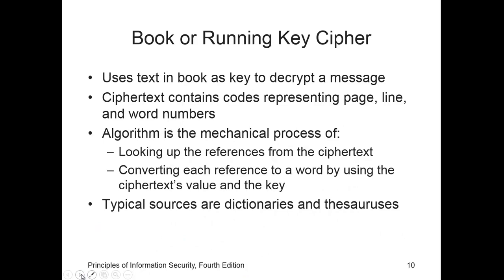The running key cipher is a type of poly-alphabetic substitution cipher that uses text from a book as a key to decrypt the message. The ciphertext will contain codes representing page, line, and word numbers. The decryption algorithm looks up the references from the ciphertext and converts each reference to a word using the ciphertext value and the key — typically using dictionaries for this purpose.